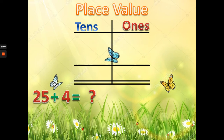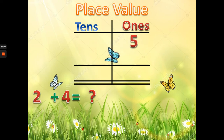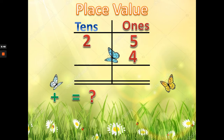Let's put these numbers into their proper place. The 5 from 25 goes to the ones place, and 2 goes to the tens place. Now what about 4? The 4 will also be in the ones place. This is how we place a two-digit number and a one-digit number — understand?